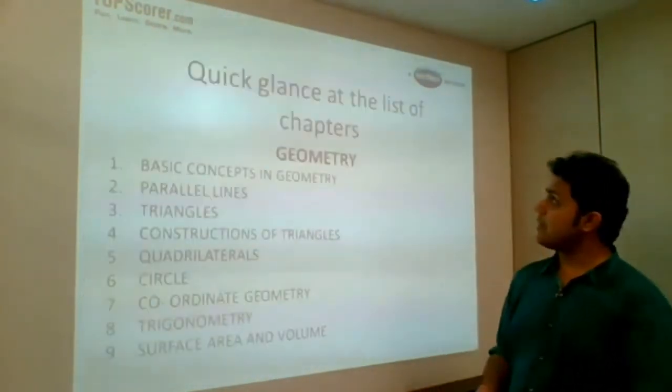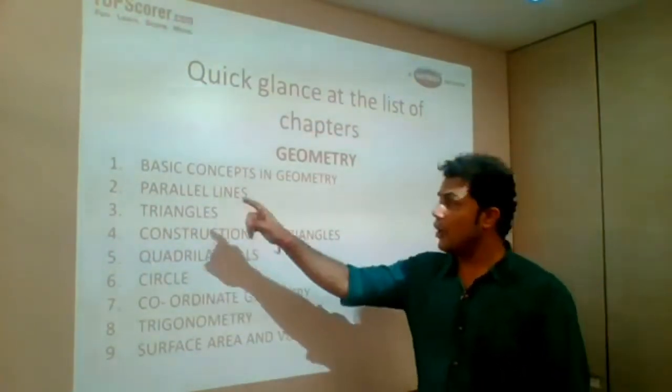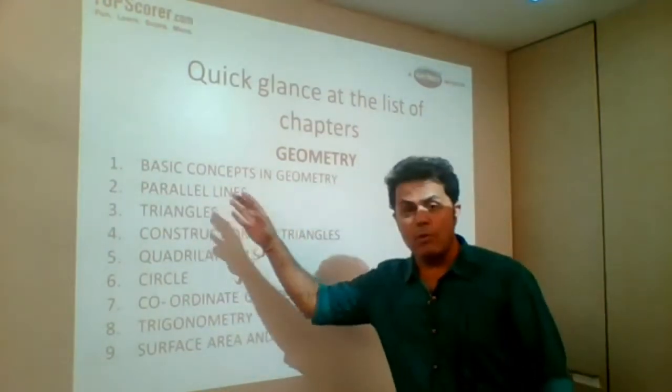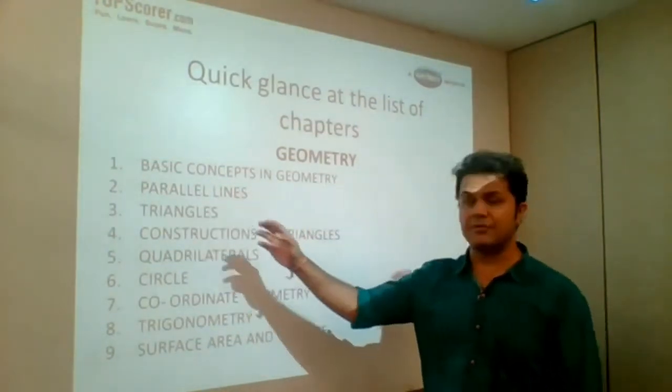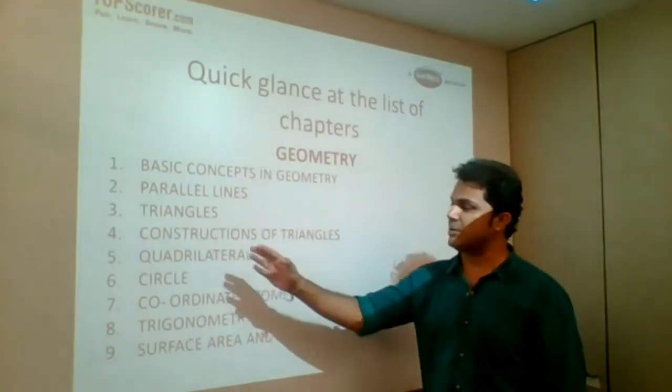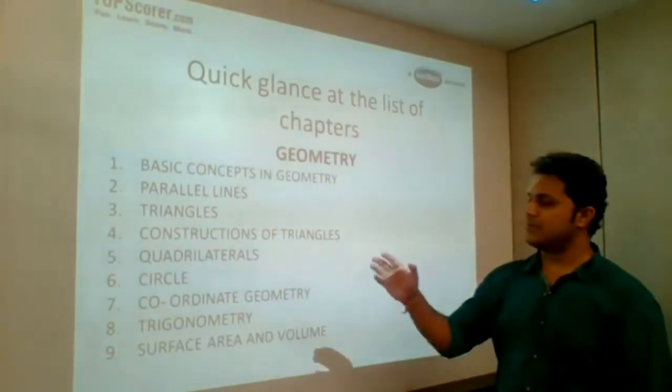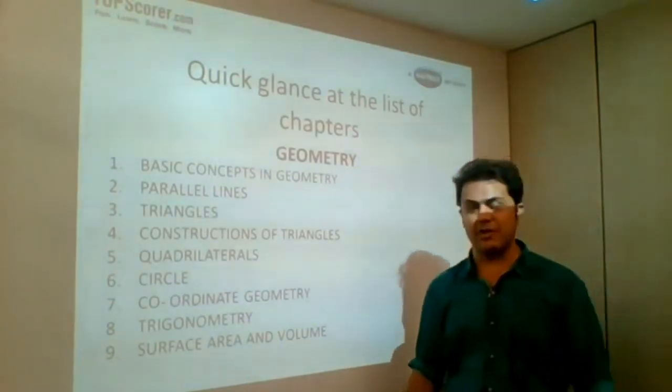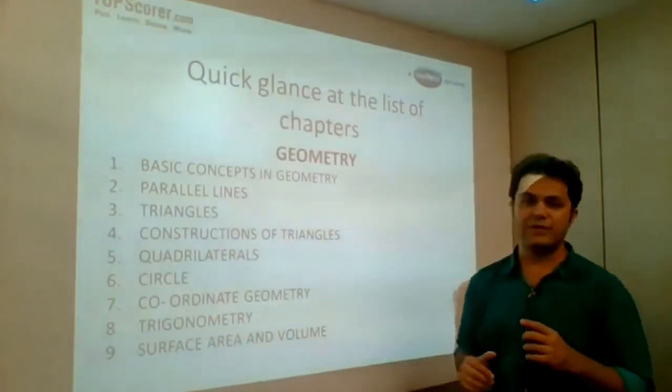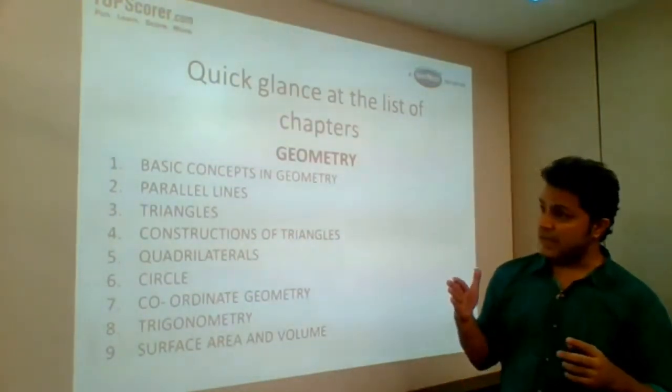Now we will have a quick glance at the list of the chapters that we have for geometry throughout the year. Chapter 1: basic concepts in geometry. Chapter 2: parallel lines. Chapter 3: triangles. Chapter 4: construction of triangles. Chapter 5: quadrilaterals. Chapter 6: circle. Chapter 7: coordinate geometry. Chapter 8: trigonometry. And lastly chapter 9: surface area and volume. So these are the chapters that we have studied throughout the year.